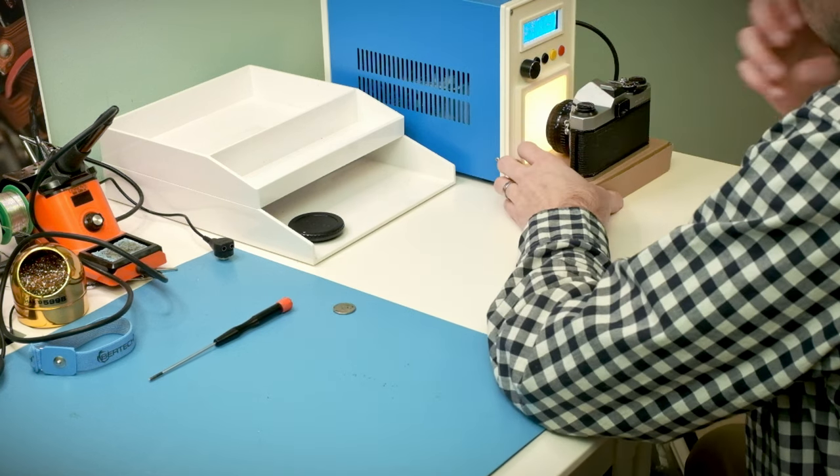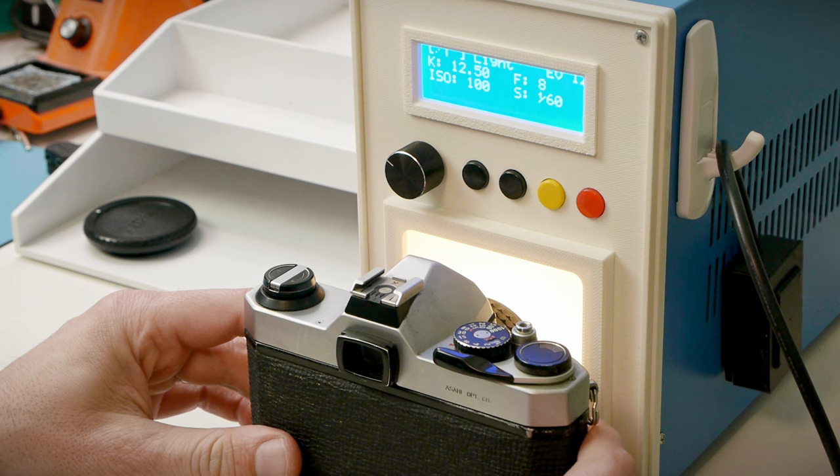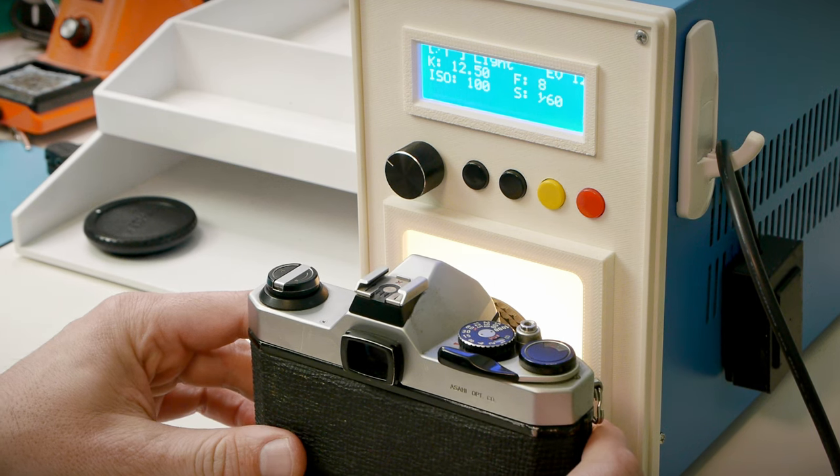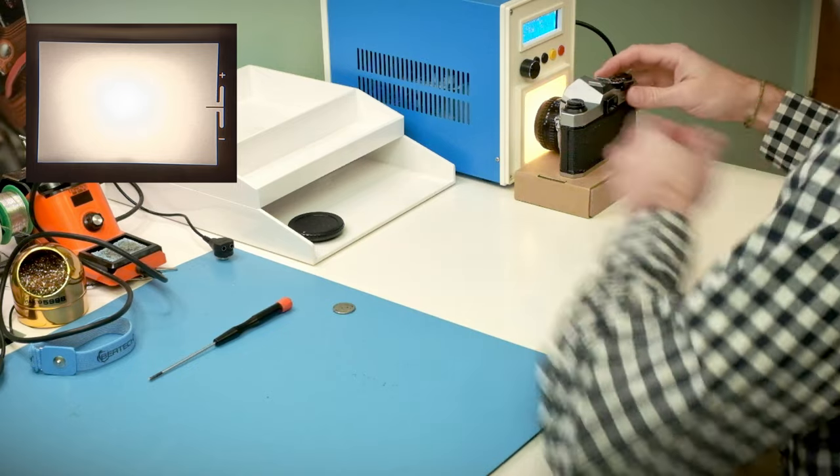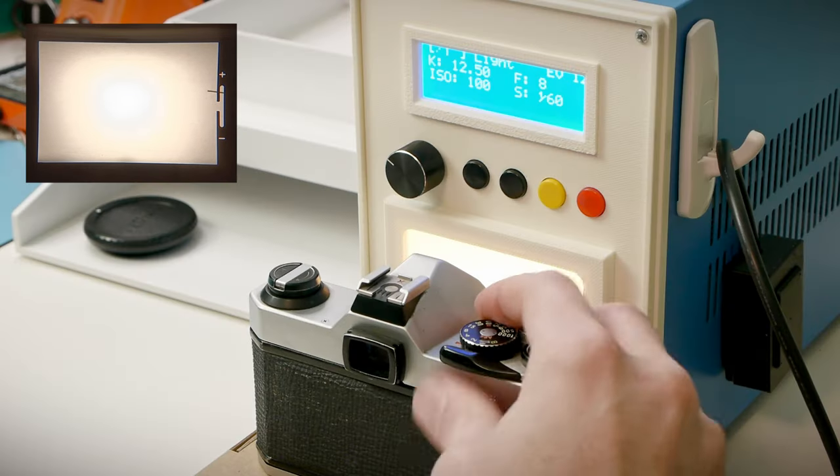I'm going to dial in a couple different light values on my camera tester, match the settings on my camera, and then see where the needle ends up in the viewfinder. I'm starting at EV12. That actually looks pretty good. The needle is almost dead center.